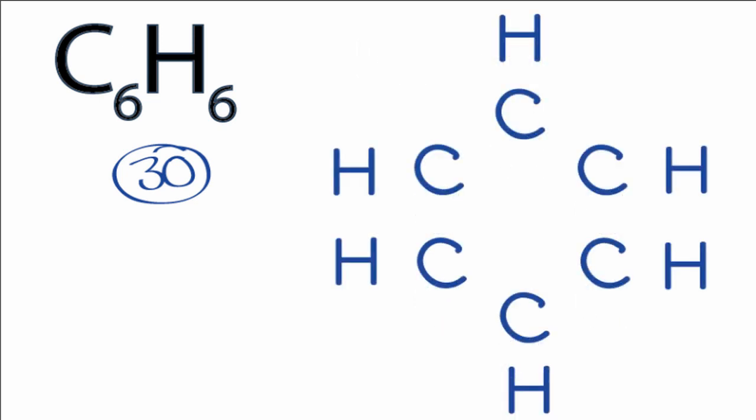So we have our skeleton structure, so let's put two electrons between each of the atoms to form chemical bonds. So we'll put them like this, and we'll go around and do that for all of the atoms.